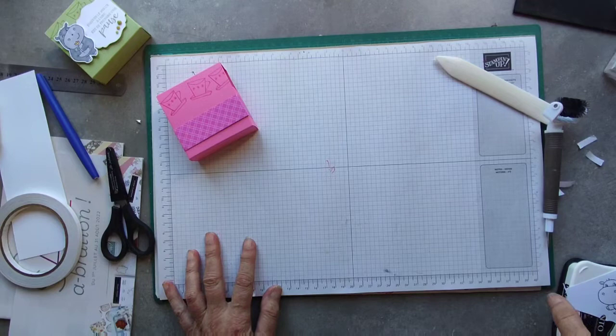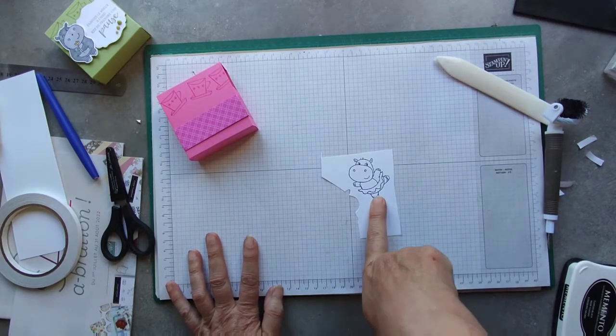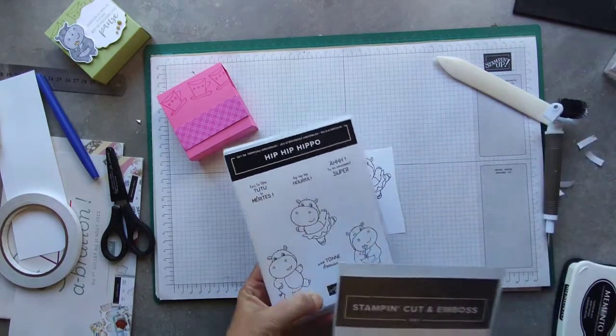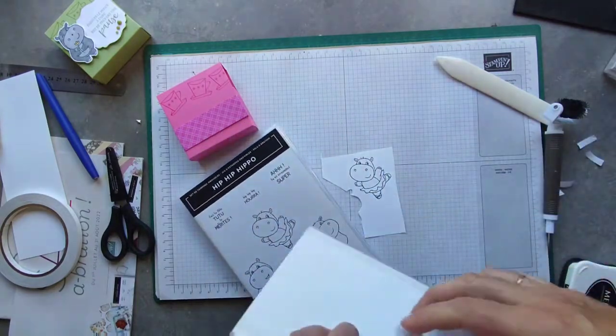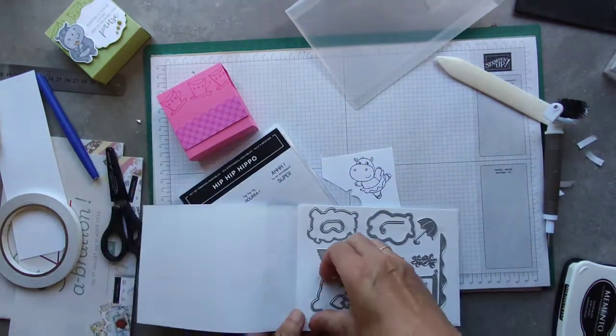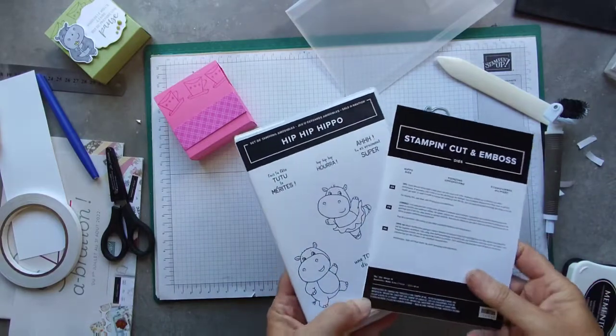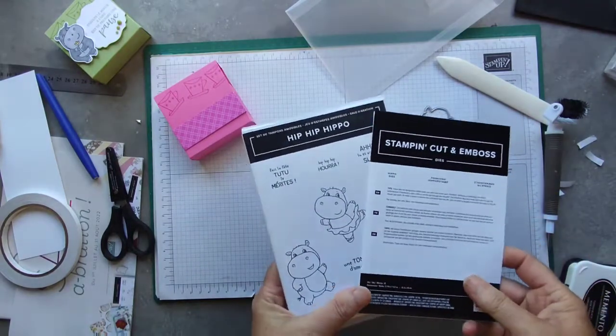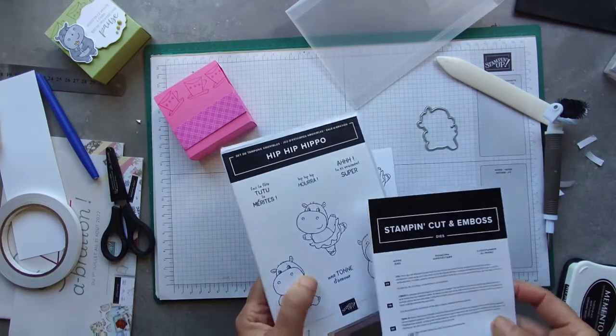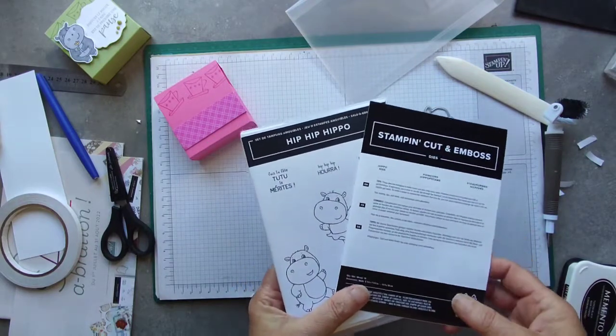Now I am going to move on to the decoration. I've already stamped the hippo. This is the Hip-Hip-Hooray set and they are matching dies. As I say, you can get these with the Celebration Promotion.